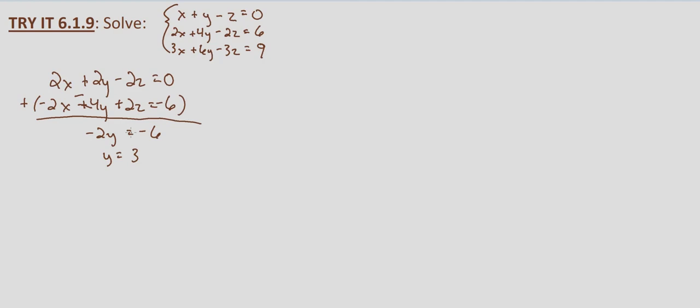So we got a definitive number for y in our first step of elimination. So let's go ahead and substitute that into our equations and see what we get so we can end up with just two variables.